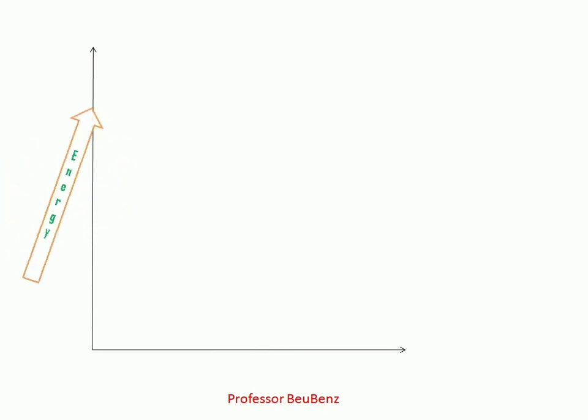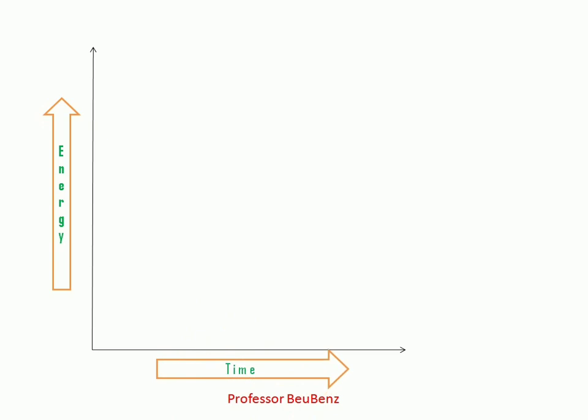On this axis is the energy of reaction, and on the second axis is the time, the progression of the reaction. First, these are the reactants. Methyl bromide is reacting with sodium hydroxide. When sodium hydroxide splits into Na+ and OH-, this OH- acts as a nucleophile and it attacks on the carbon.